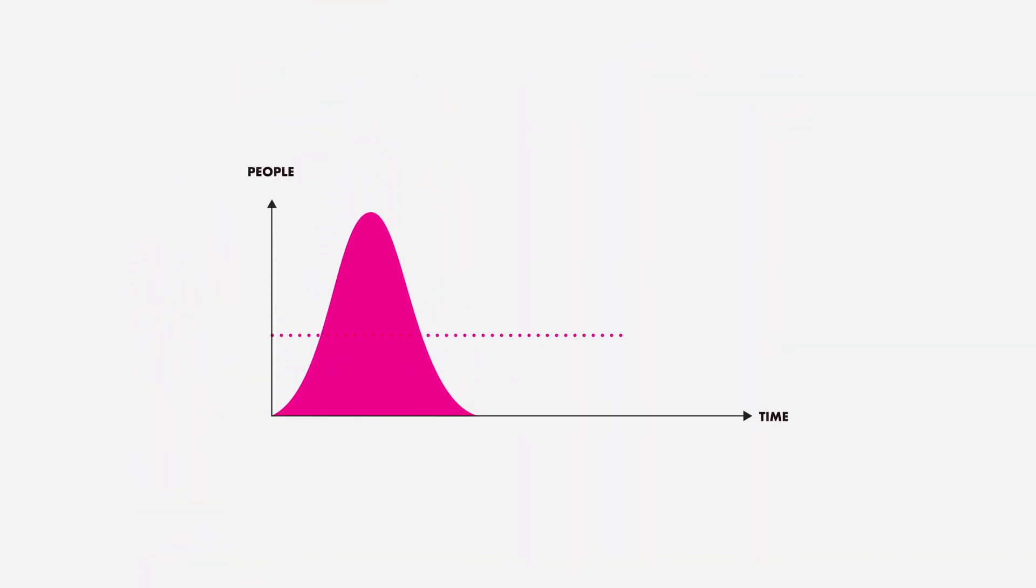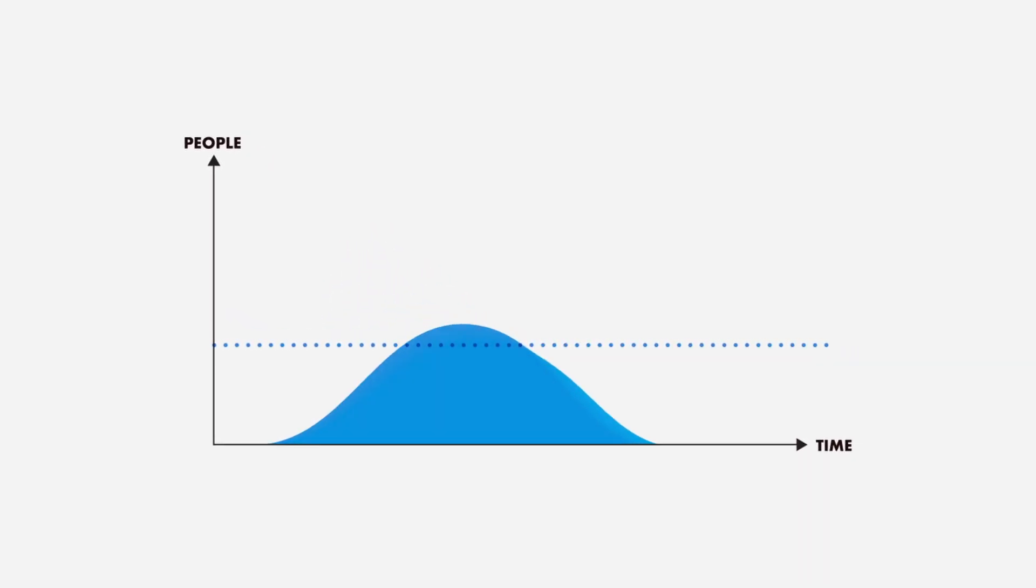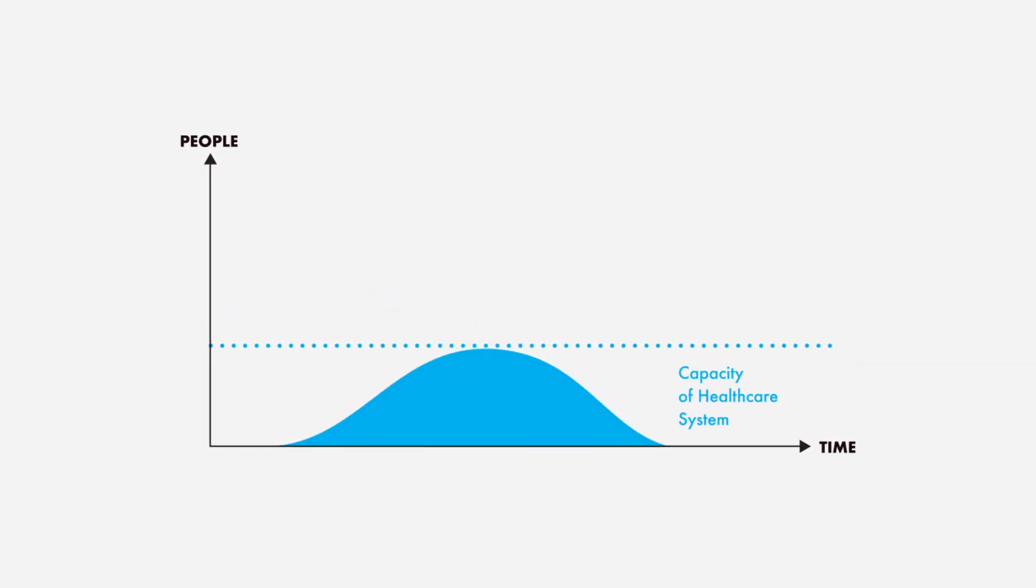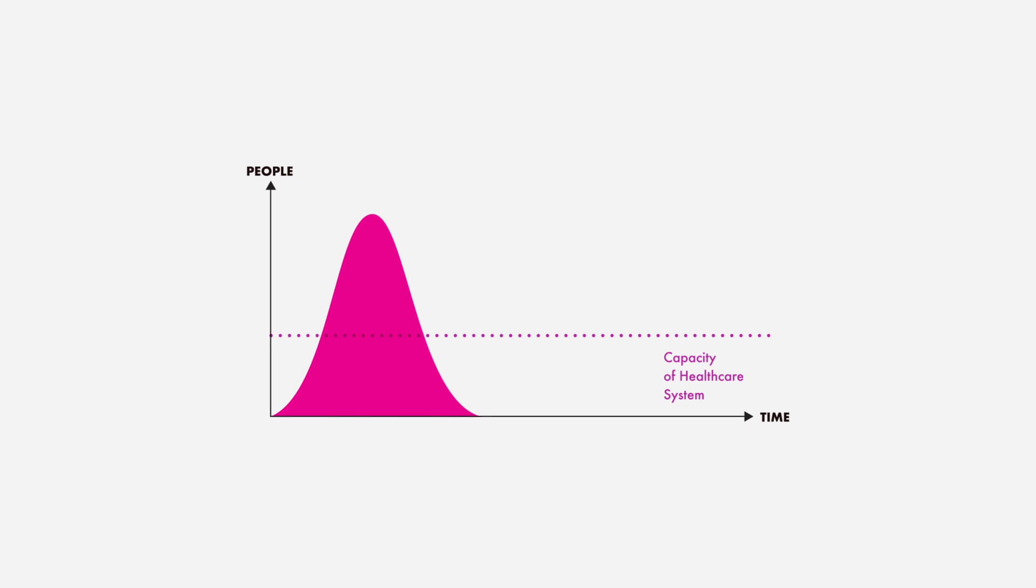But scientists are very clever and they found a solution. When they tried to flatten the curve to fit everyone inside the hospital line, this new curve appeared. This new curve means that everyone can be treated in a hospital if, instead of all people getting sick at the same time, we could get sick at different times.